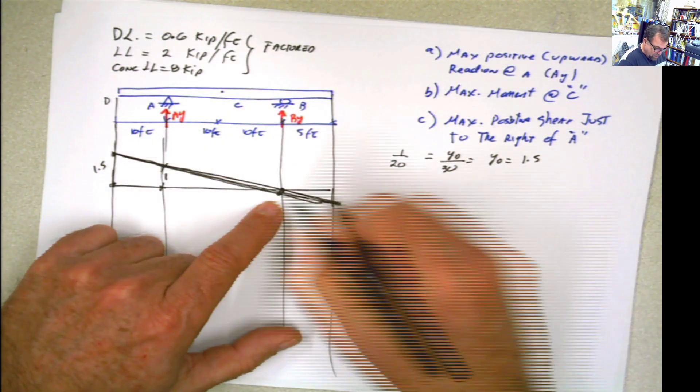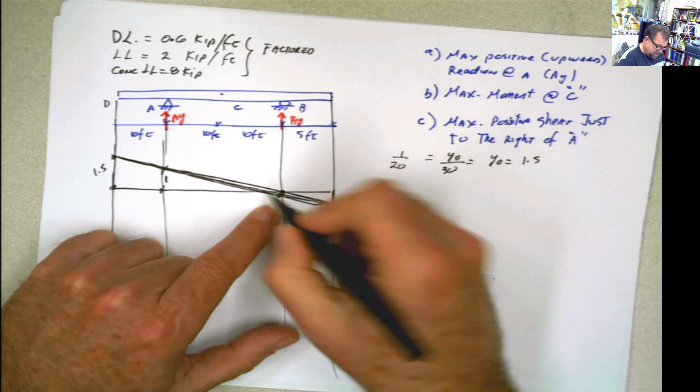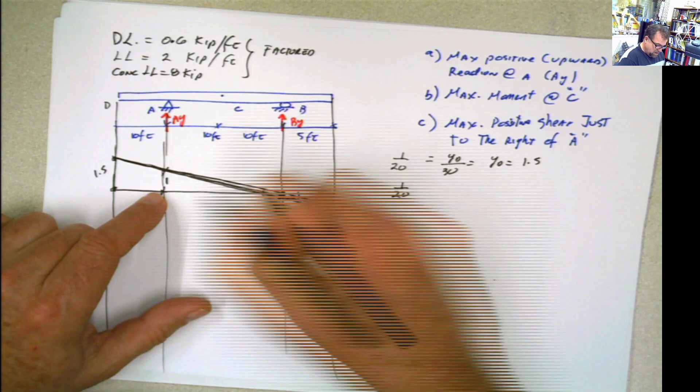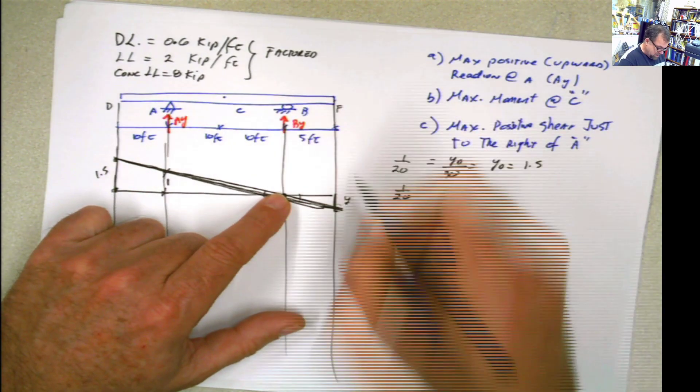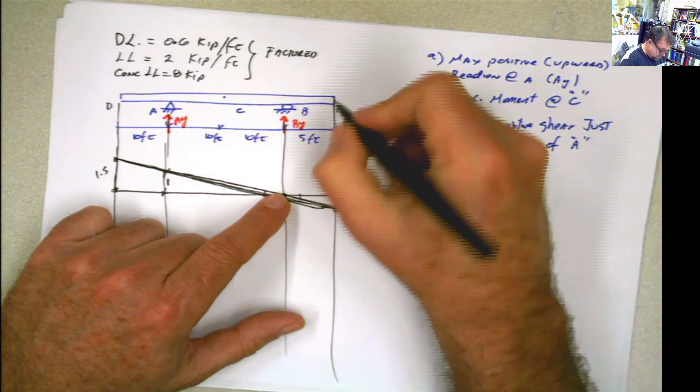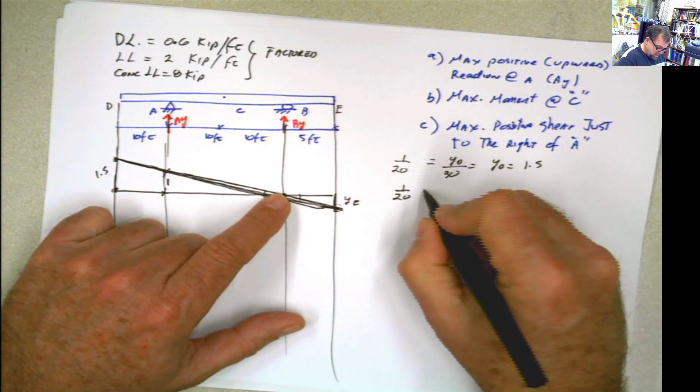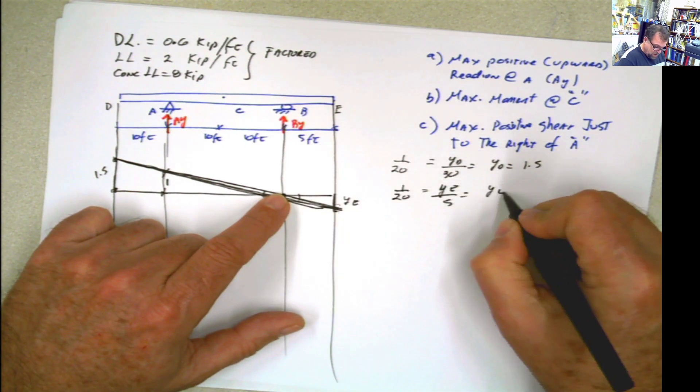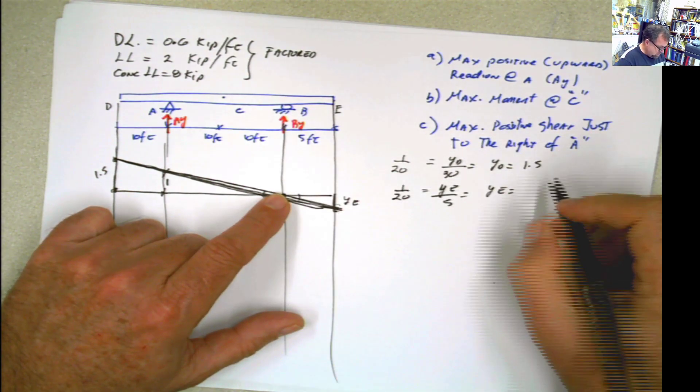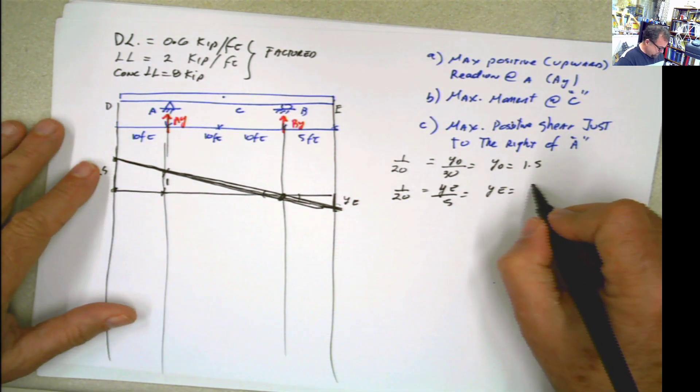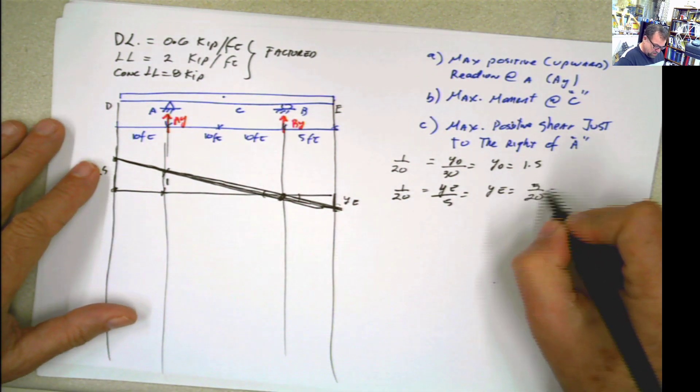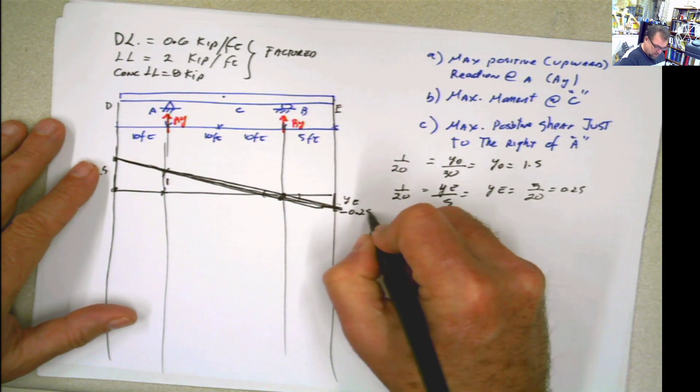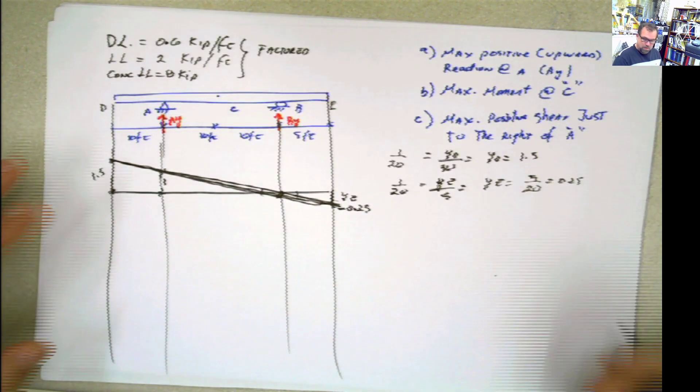Now, if I want to know this distance here, same thing. This angle is the same angle. So if this is 1, I can say 1 is at 20, as this ye is at 5. And then we can solve for that ye here. And that ye is going to be equal to 5 divided by 20, which is 0.25. Of course, it's going to be negative because it's going to be in this part. Influence line for the reaction at A, done, completed.